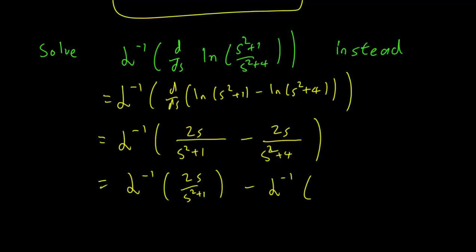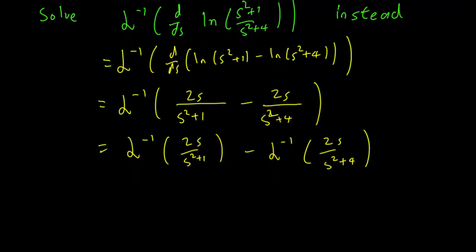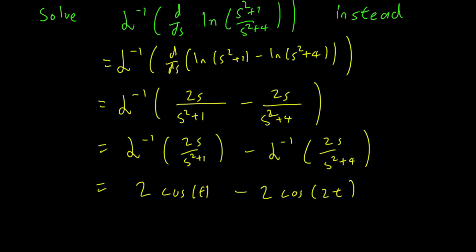So we have to take this inverse Laplace transform, and both of these are really easy. You can look at your formula sheet to deduce that the inverse Laplace transform of 2s/(s²+1) is simply 2cos(t). And the inverse Laplace transform of 2s/(s²+4) is simply 2cos(2t), because 4 is 2 squared. So we have solved this easier modified problem.